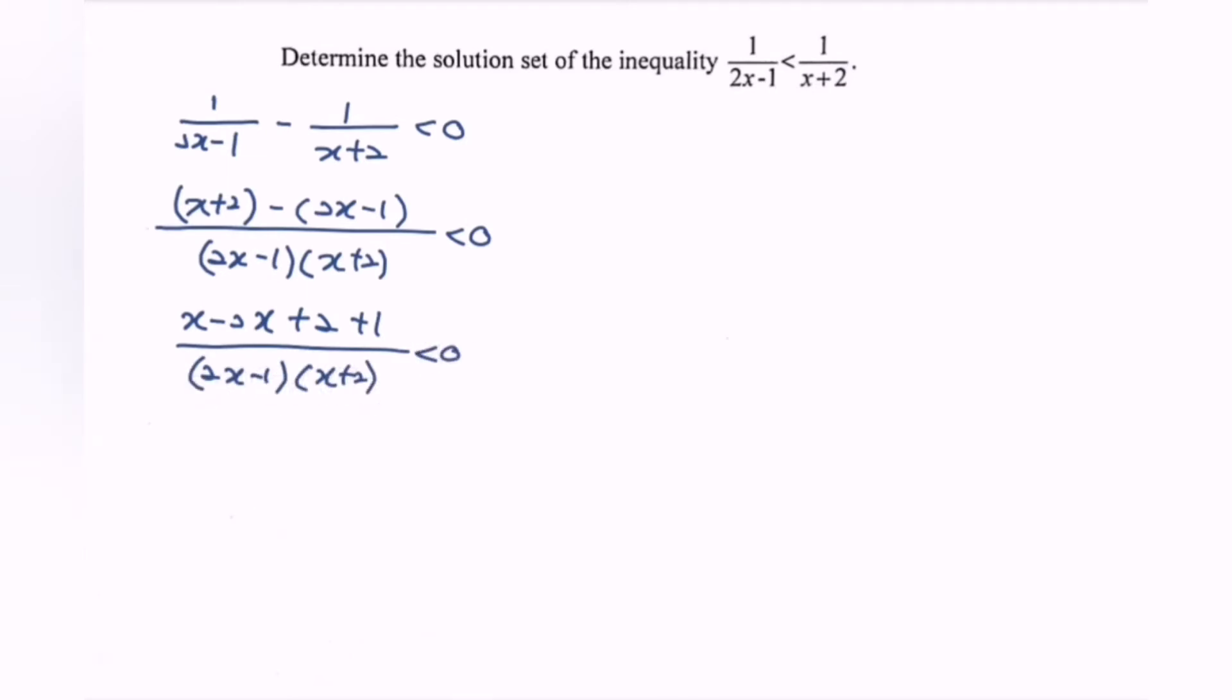So just to remind, never ever expand the denominator. Next is to simplify and we have negative x plus 3 over 2x minus 1 multiplied with x plus 2. And notice that we already have the simplest form.